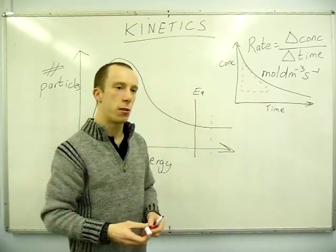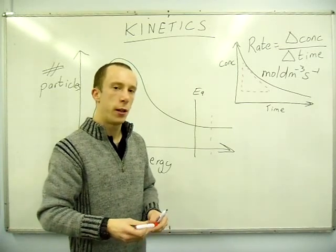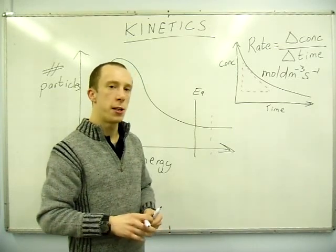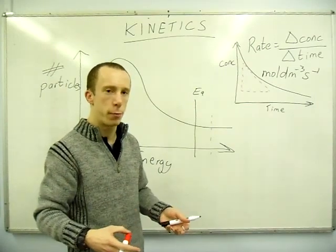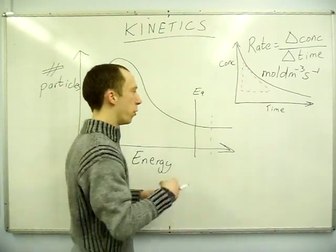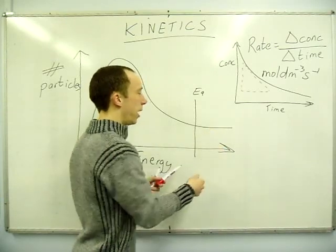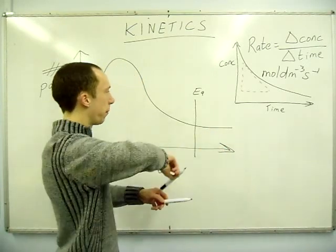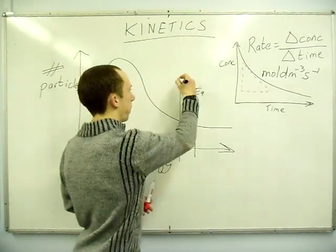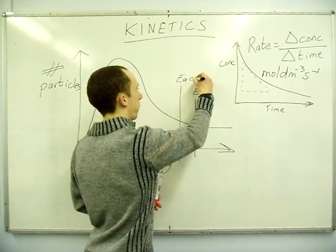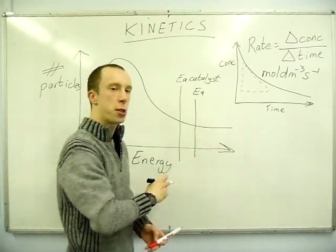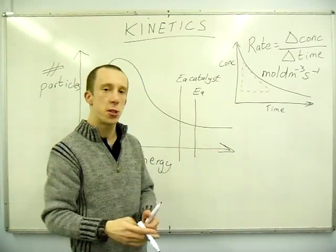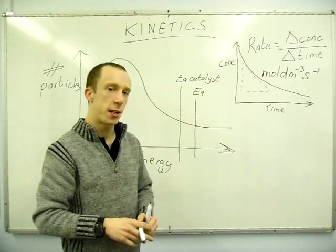If the catalyst is providing an alternative pathway with a low activation energy, then surely more should be reactive. So I would move it to the left. And as you can see now, the area to the right of the line has increased. So that shows the effect of a catalyst.